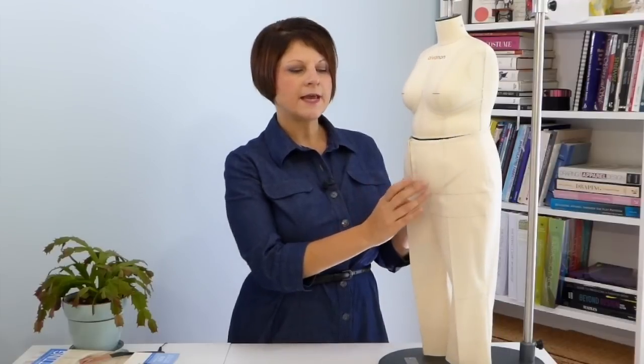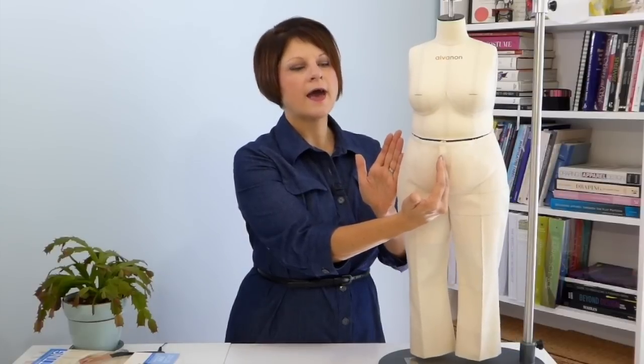You're going to take a measurement from seam line to seam line at center front to determine how much you need to add in the width. So you're going to measure the opening or the gap at the high hip line or the most prominent level of the tummy, and divide that by two. You're going to divide that in half simply because we're only going to make a pattern adjustment to half of the front pattern. So you're going to record that number.